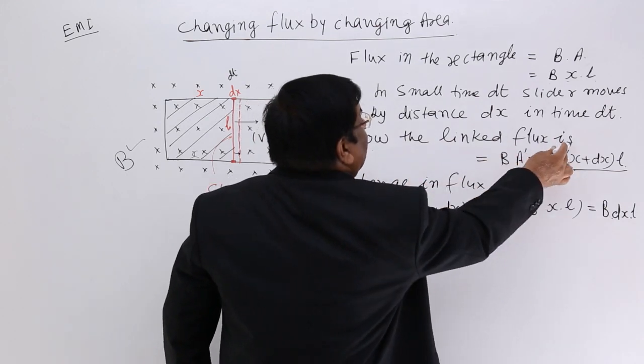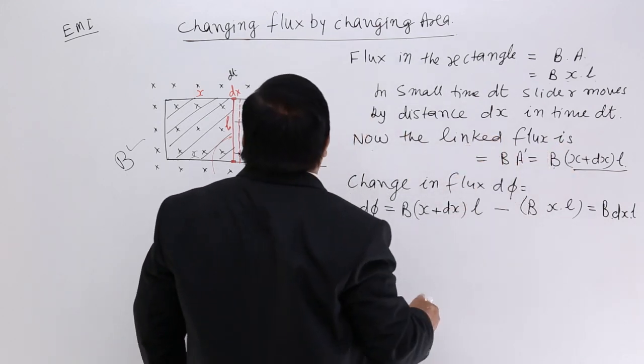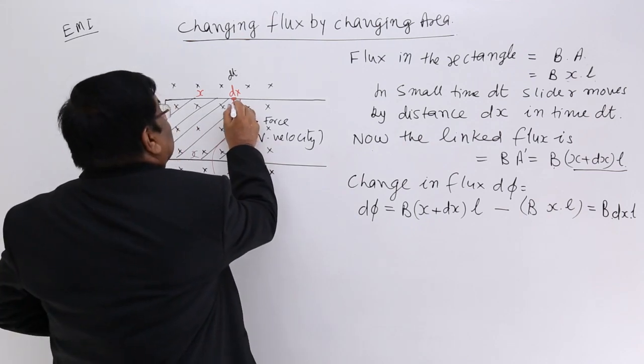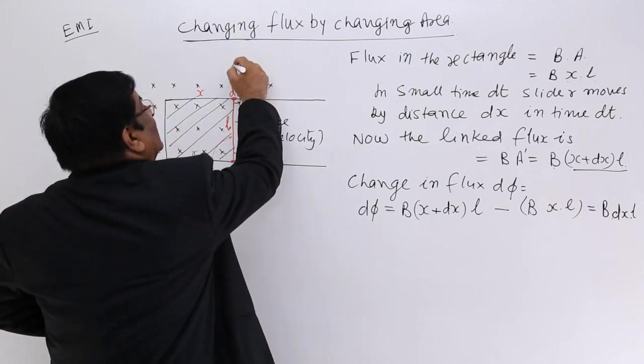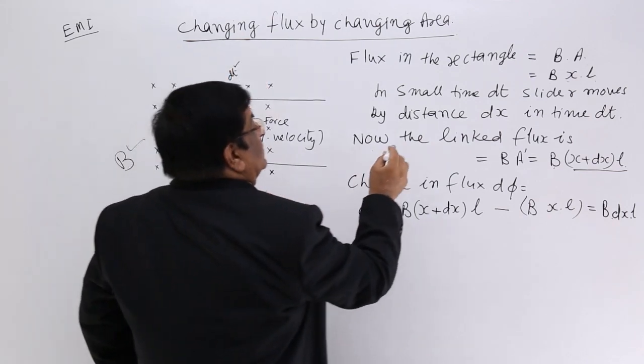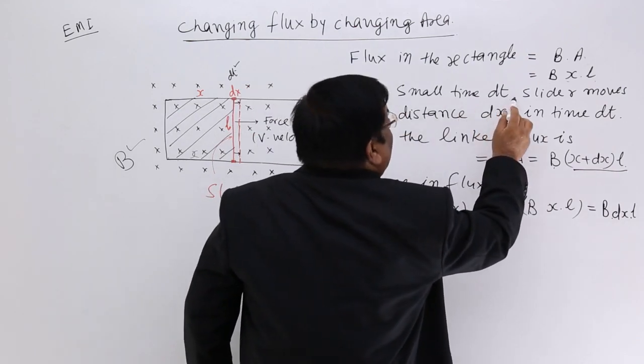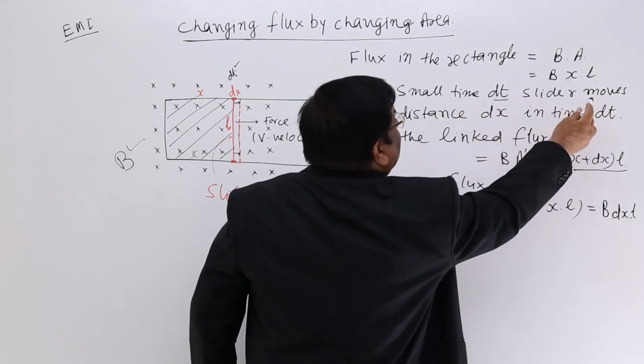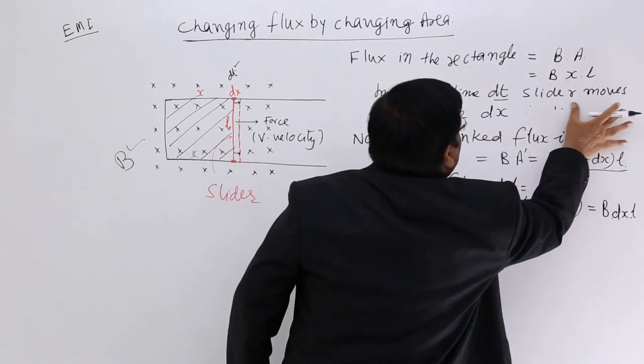Now the flux linked after the motion, how much has it moved? The distance dx. How much time has it taken? dt. So in a small time dt, the slider moves by the distance dx.